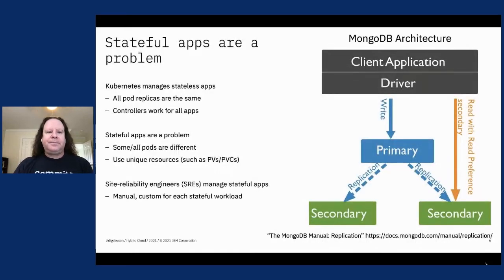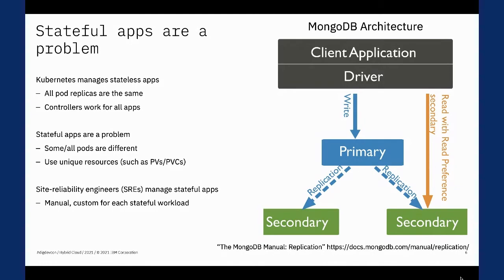Why are operators necessary? Most workloads deployed to Kubernetes and OpenShift are stateless workloads, and Kubernetes is already optimized to manage those using its default functionality. The problem is what we call stateful workloads — those are much harder to manage. Each one has to be managed differently, and Kubernetes out of the box doesn't know how to manage those. As an example of a stateful workload, let's consider the MongoDB database application.